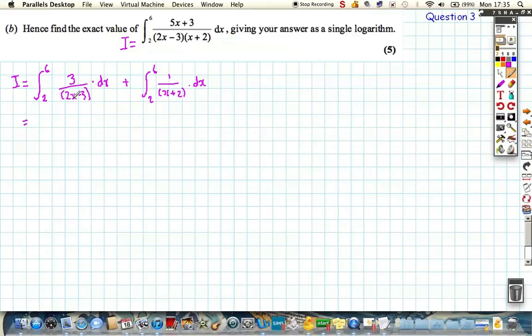From this expression here, we can see that the top is almost the integral of the bottom, slight difference. So we're going to get the 3 from the top to ln 2x minus 3. And we're going to get, from this one, we're just going to get straight, integrate 1 over x plus 2 goes to ln x plus 2, and this is all between 2 and 6.